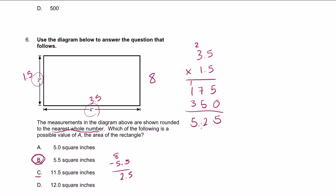You have two numbers behind the decimal point, 5.25. So the minimum possible area for this rectangle is 5.25. That's the minimum. So 5.5 is definitely a valid answer. So I'm going to stick with my answer, B. Next problem.